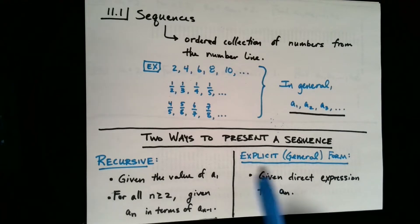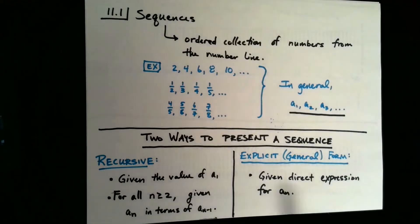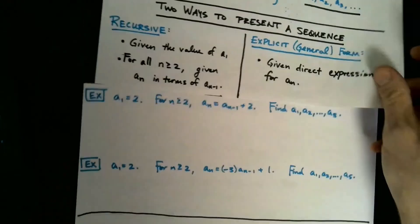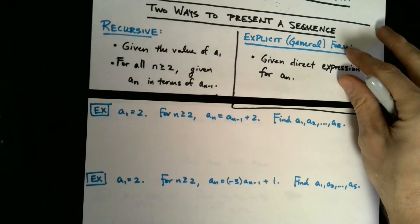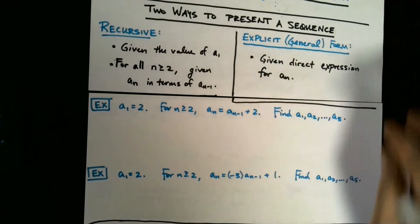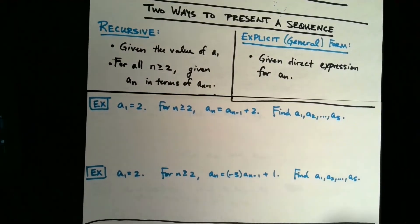Once you have a₁, and you know how to form the next number, then you can do just that. And once you have the next number, a₂, you can use the recursive definition to get yourself the subsequent number. So you can always get the subsequent number from the previous. Another way that sequences can be presented is an explicit form. In an explicit form, you're simply going to be given a direct expression for your aₙ. So this is going to be a simple plug-and-chug presentation.